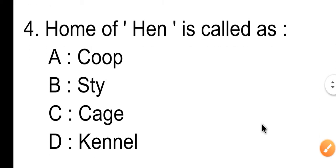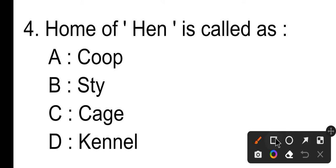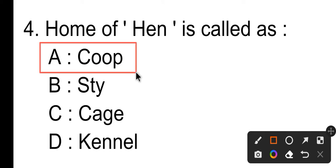Question number four: the home of a horse is called as — Option A is cube, Option B is stye, Option C is case, Option D is kennel. Option A is the correct answer.